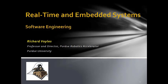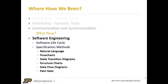We're going to finish out the semester by talking about software engineering concepts. If you remember where we've been, we've been talking about scheduling of periodic tasks. We also talked a little bit about scheduling of sporadic tasks, tasks that were aperiodic. And then we started to talk a little bit about communication and synchronization, and then we kind of set the stage for software and functional specifications. Now we're going to talk really about software engineering methods.